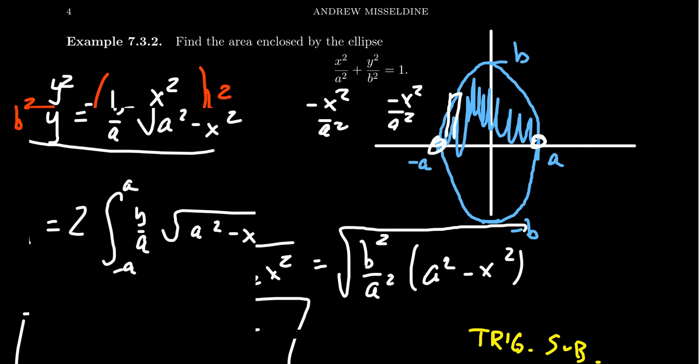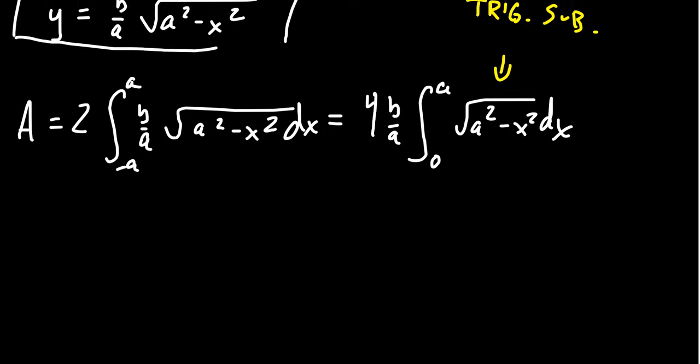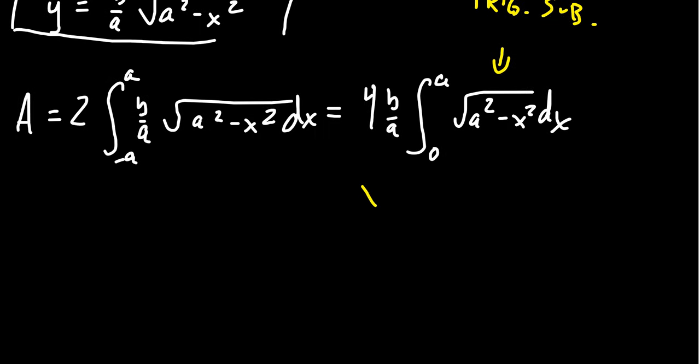Using that substitution, let's look at all the ingredients. We need to set x equal to a sine theta. a is just a constant, we'll leave it alone. So trusting the codex, we set x equal to a sine theta. And so dx, when we take the derivative, is going to be a cosine theta d theta.